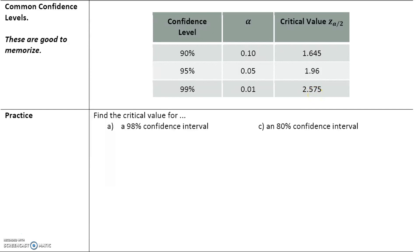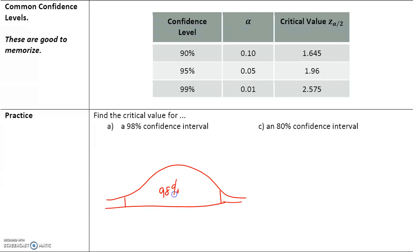Let's find the critical value for a 98% confidence interval — I'll have you start this and we'll finish in class. The area in the middle is 98%, leaving 2% in two tails. Dividing by 2, each tail will have 1%. Use the normal distribution calculator to find the corresponding critical value.